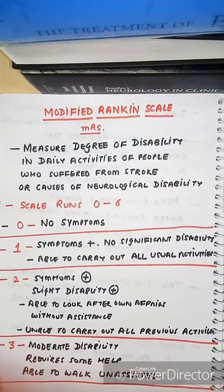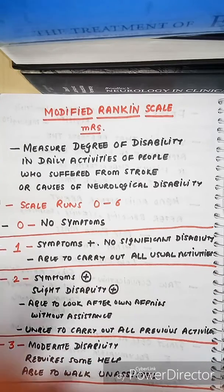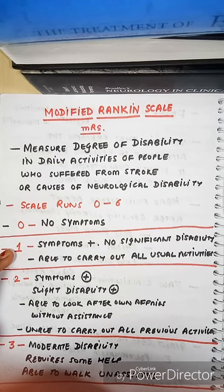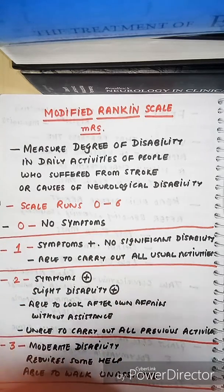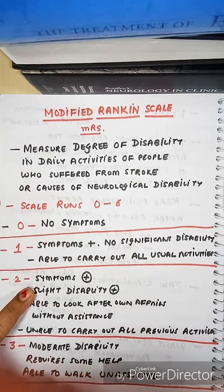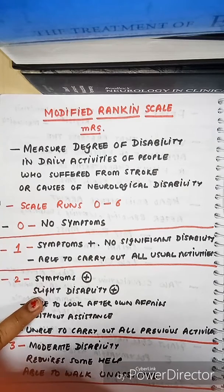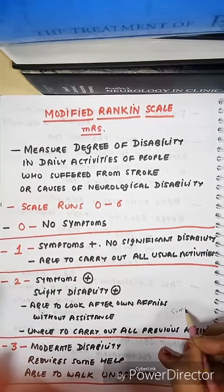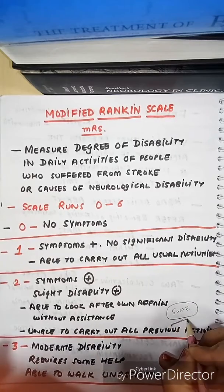Now, a simplified version to remember: 0 means no symptoms, 6 means death. Grade 1: patient has symptoms but is able to carry out all his usual and previous activities. Grade 2: patient has slight disability but is able to look after his own affairs, though some of his activities are affected.